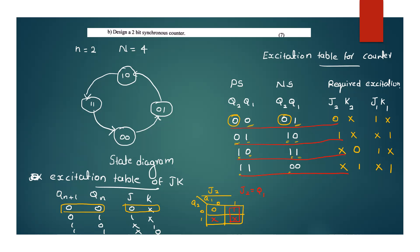This is the expression for K2. The K-map for K2 has Q2 and Q1 axes with values: at Q2=0, Q1=0 the value is X; at Q2=0, Q1=1 the value is X; at Q2=1, Q1=0 the value is 0; at Q2=1, Q1=1 the value is 1. The expression derived for K2 equals Q1.